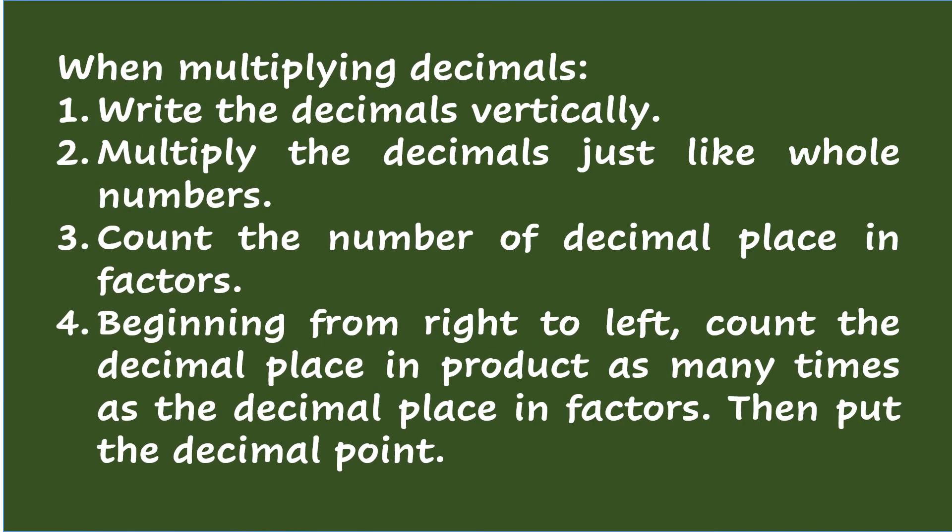When multiplying decimals: write the decimals vertically, multiply the decimals just like whole numbers, count the number of decimal places in the factors, then beginning from right to left count the same number of decimal places in the product, and put the decimal point in place.